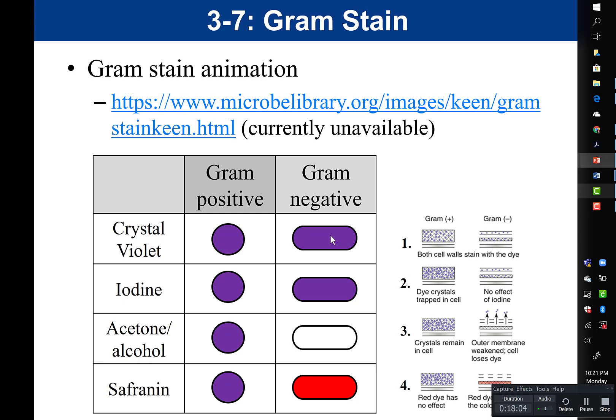You also want to review what it means to over-decolorize versus under-decolorize. If you over-decolorize, what would the cells look like? If you under-decolorize (not running the decolorizer long enough), what would the cells look like? You should be able to explain why either outcome is problematic and how it affects the results.